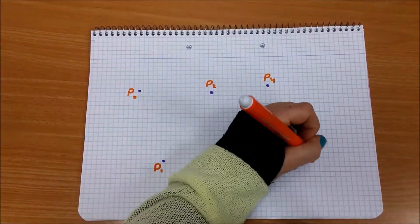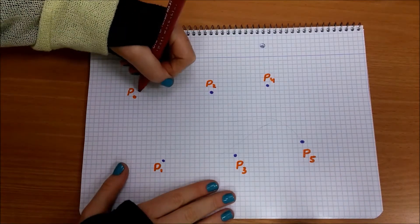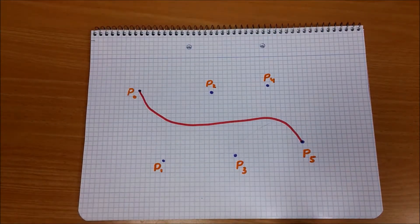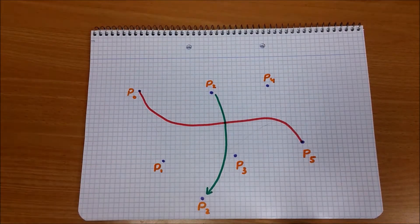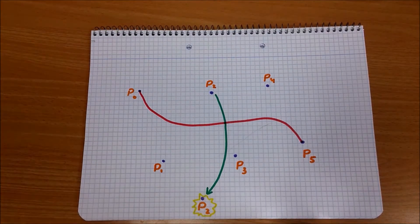Something to note about these curves. When we move one control point, the whole curve is affected. We can see here what happens when I move P2.